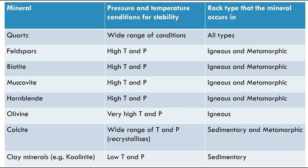Here's a summary table of all the common mineral-bearing minerals you need to know. Quartz has a wide range of conditions and is found in all rock types. Feldspars, biotite, muscovite, and hornblende all form under high temperature and pressure conditions and are only found in igneous and metamorphic rocks. Olivine forms under very high pressure and temperature and is only found in igneous rocks. Calcite has a wide range of temperatures and pressures because it can re-crystallize and is found in both sedimentary and metamorphic rocks. Clay minerals like kaolinite have low temperatures and pressures and are therefore found in sedimentary rocks.